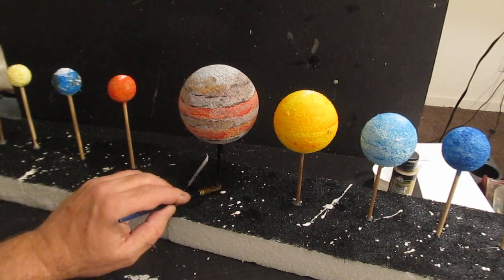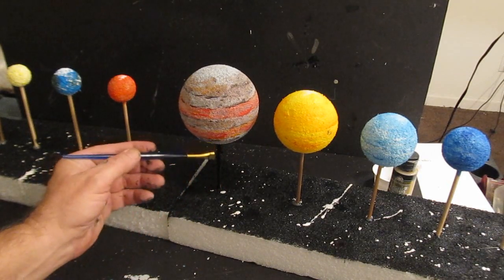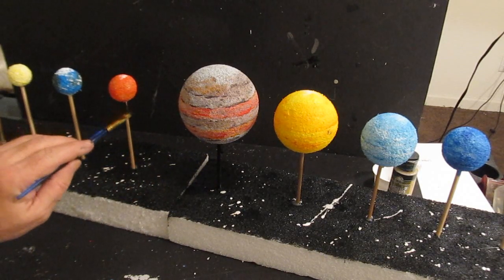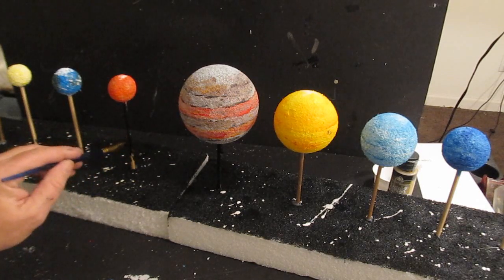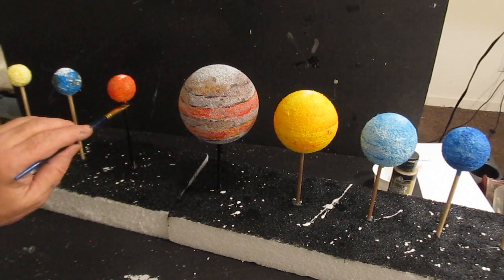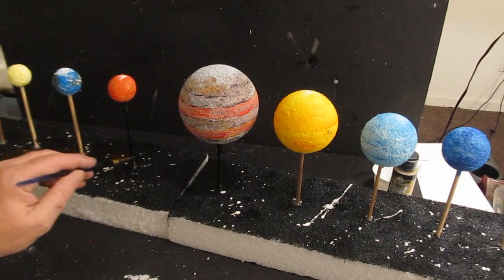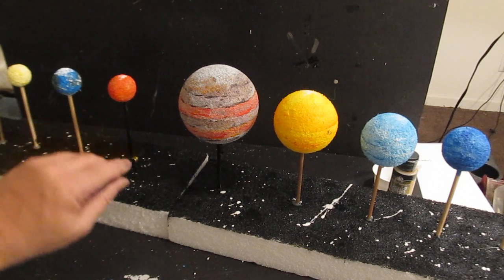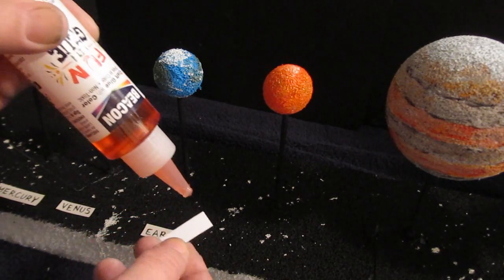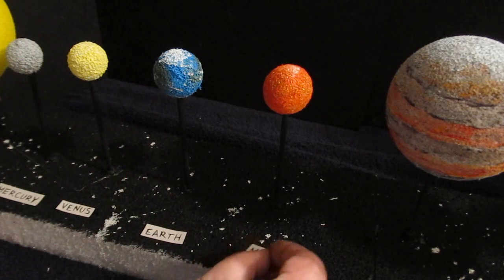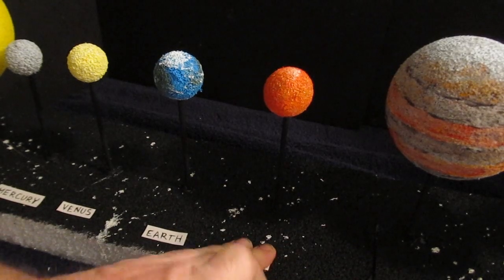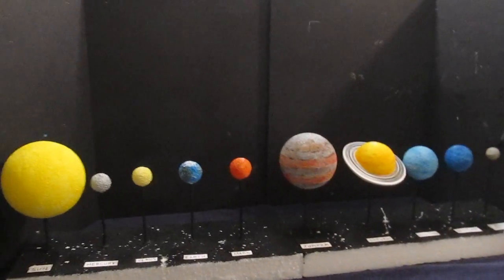A couple of things. Paint those wooden dowels black. Look at how different it looks. It almost looks like that planet Jupiter is floating in space, doesn't it? With a black background, you can't see that stick. It really makes a big difference. So, paint those dowels black. It adds to the effect very much so. Look at the polar ice cap on Mars. Now, add some labels for each planet. And you're done. Look at that. What a beautiful solar system diorama.